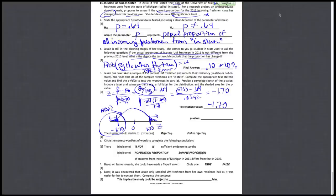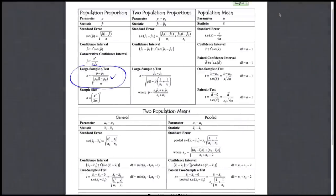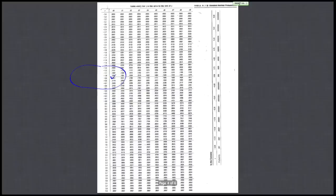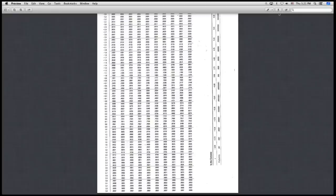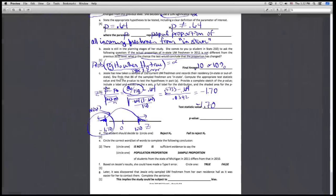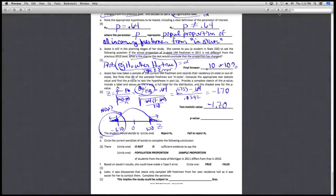We need to go to our table, table A1, and we're looking at negative 1.70. I'm seeing there a 0.0446, so we're going to take 0.0446 and double that. Doubling 0.0446 gives us a p-value of about 8 percent, almost 9 percent.